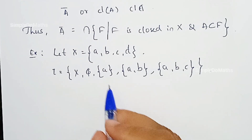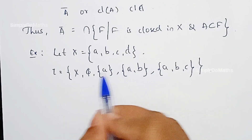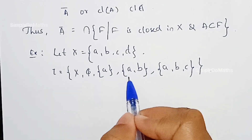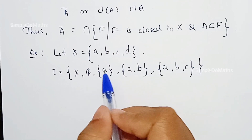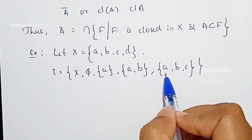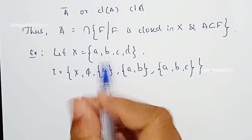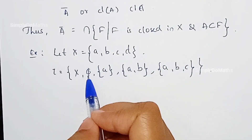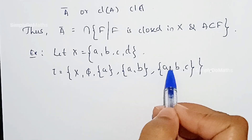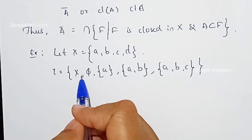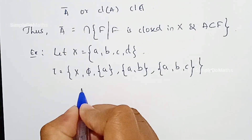For the third property — intersection — the intersection of {A} and {A, B} is {A} itself, which belongs to τ. The intersection of {A, B} and {A, B, C} is {A, B}, which also belongs to τ. The intersection of {A} and {A, B, C} is {A}, which belongs to τ. Intersection with empty is empty, and intersection with X gives the set itself. So τ is a topology on X.